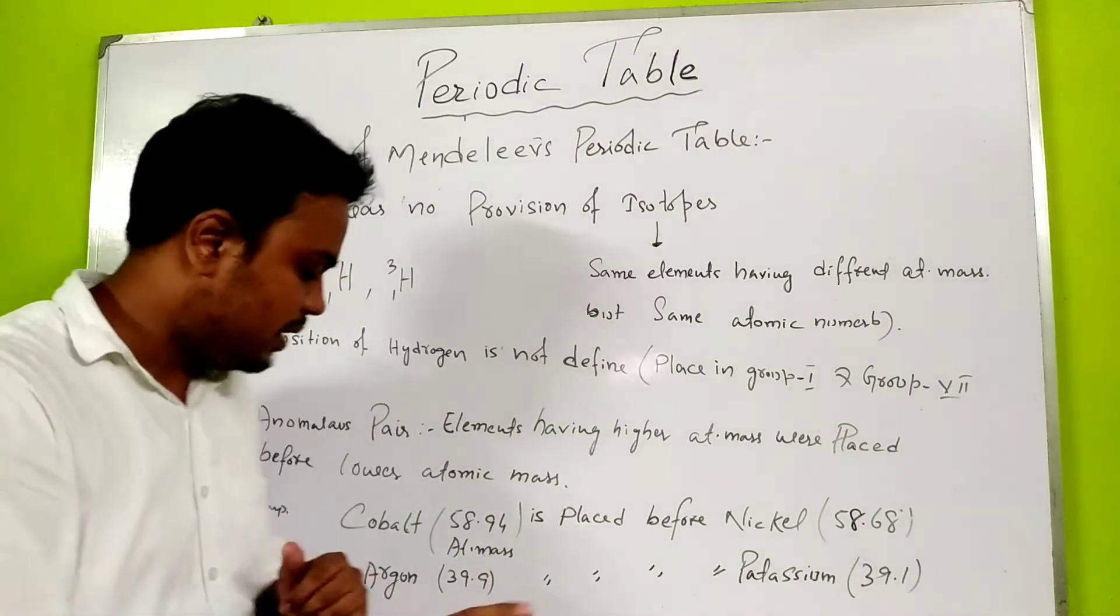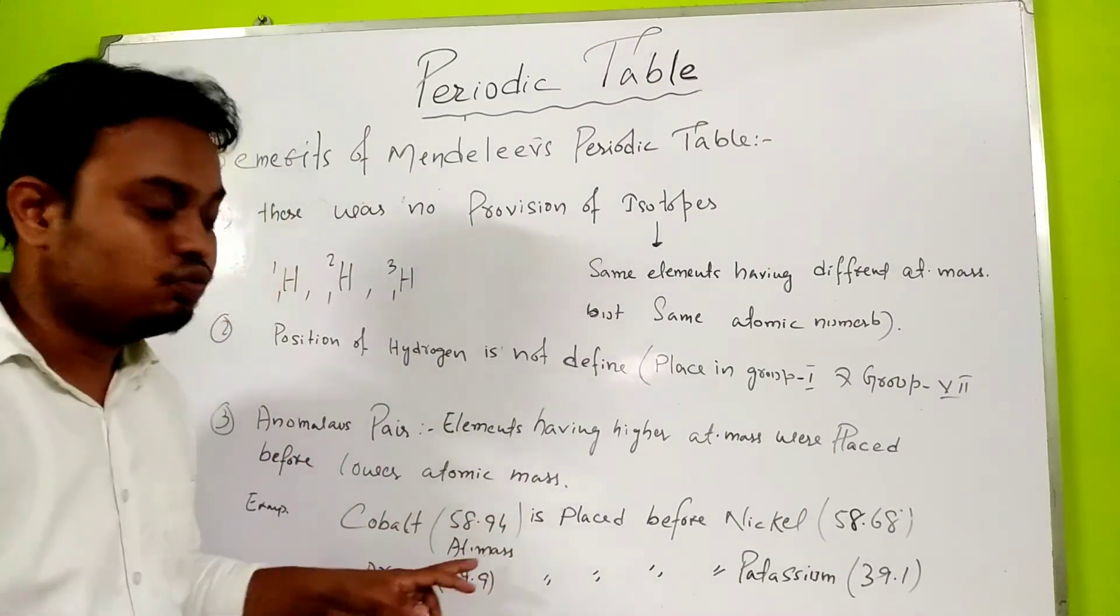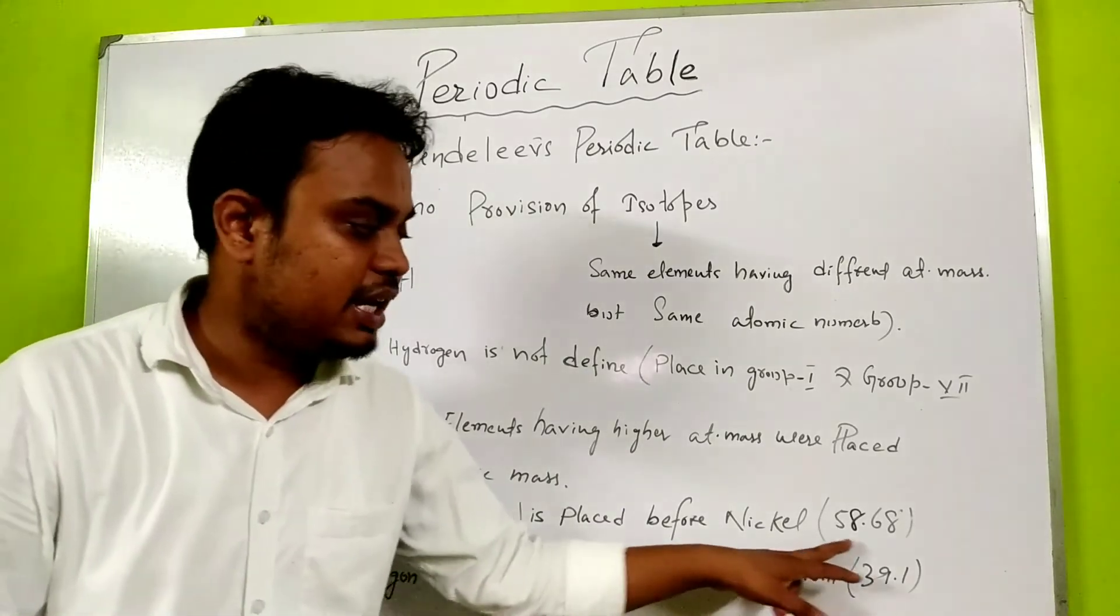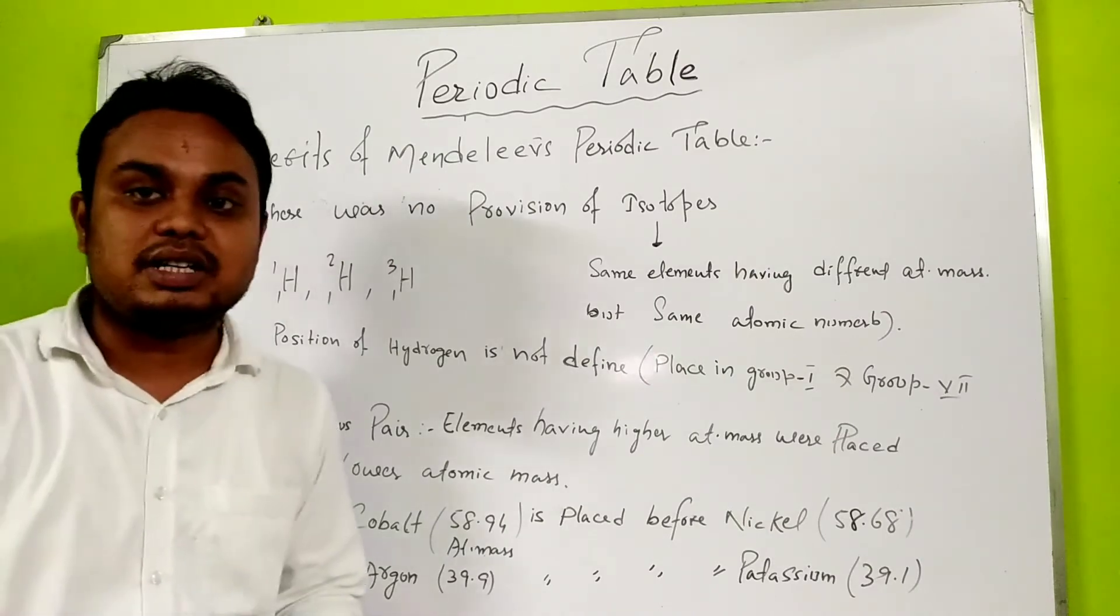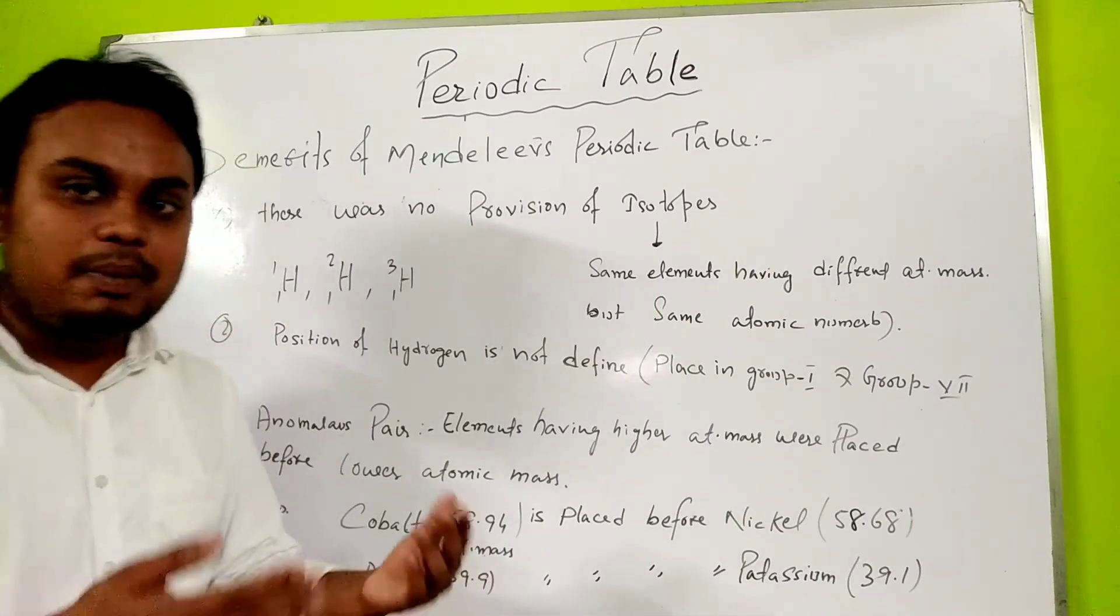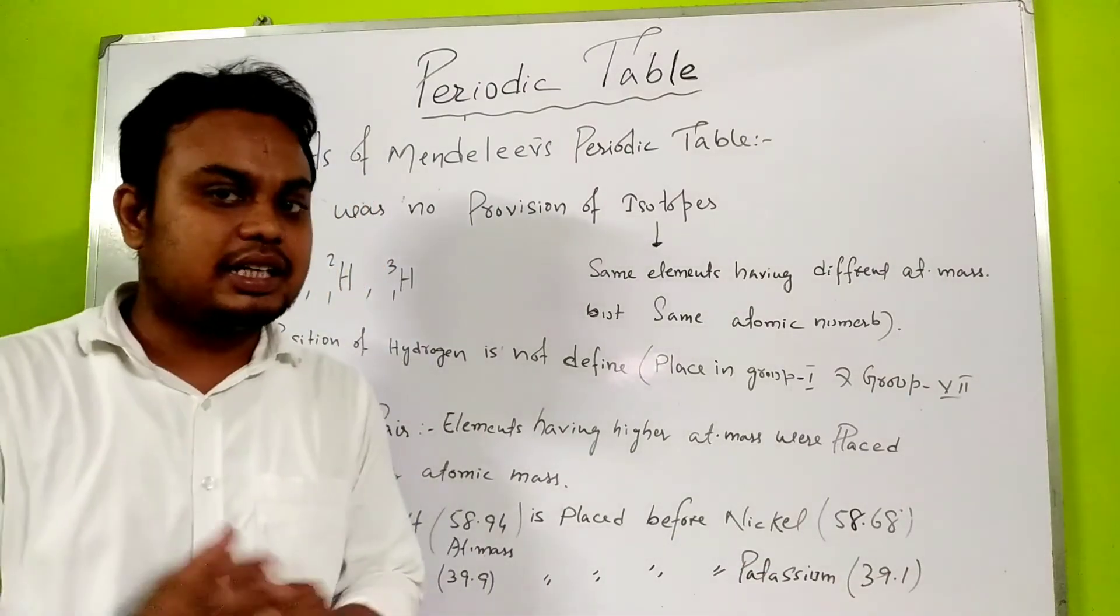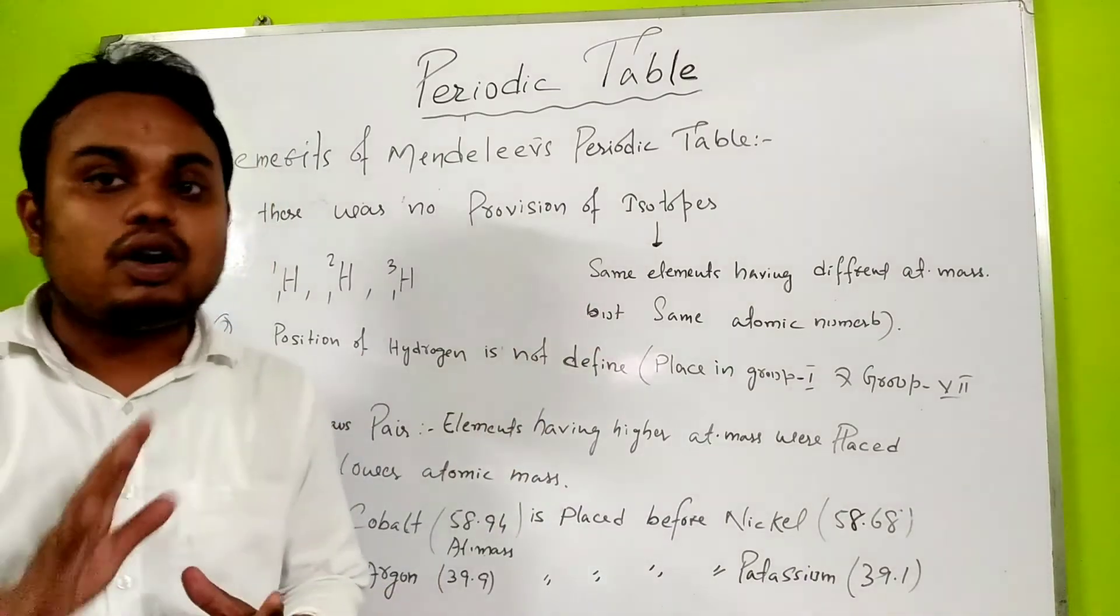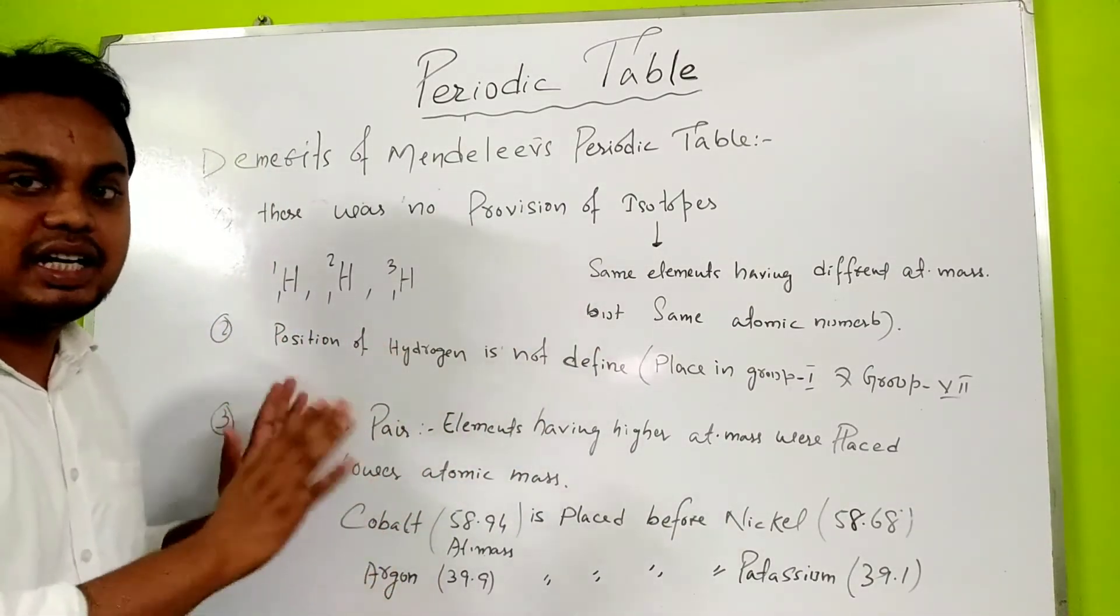For example, cobalt with atomic mass 58.94 was placed before nickel which had atomic mass 58.6. Another example: argon with atomic mass 39.9 was placed before potassium which was 39.1. Why? He was following the property and matching with the upper element's property. These are the main defects of Mendeleev's periodic table.